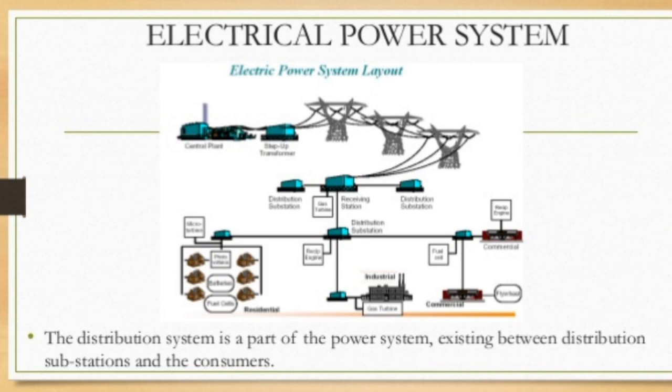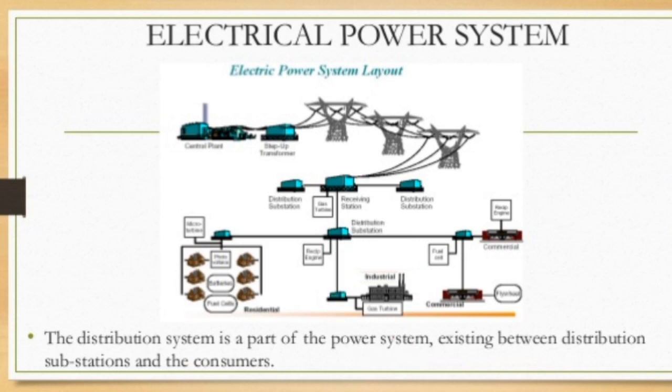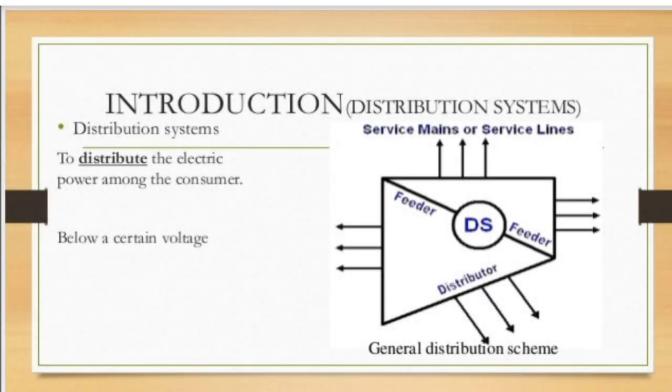Here we are showing the distribution system for different consumers. For industries, we can send a feeder directly. For local areas, towns and cities, different feeders are sent. Based on that, the distribution system may be classified. For every distribution system, a distribution substation is required — DS stands for distribution substation, as you can see in the diagram.